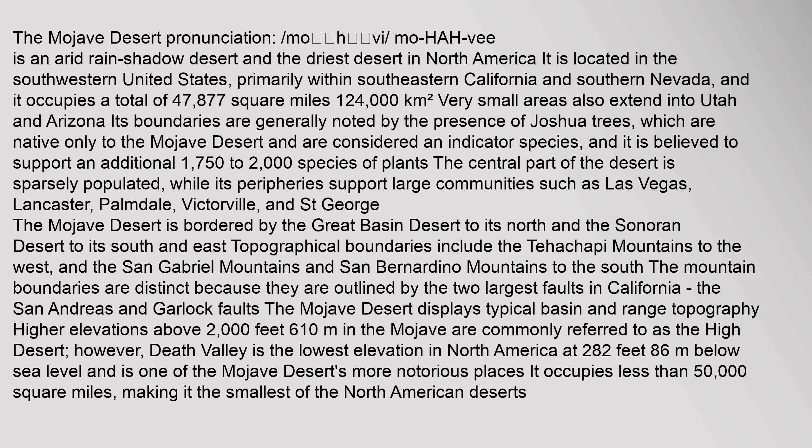Large communities include Lancaster, Palmdale, Victorville, and St. George. The Mojave Desert is bordered by the Great Basin Desert to its north and the Sonoran Desert to its south and east. Topographical boundaries include the Tehachapi Mountains to the west, and the San Gabriel Mountains and San Bernardino Mountains to the south. The mountain boundaries are distinct because they are outlined by the two largest faults in California.